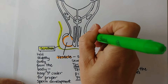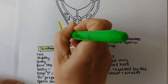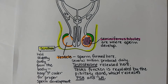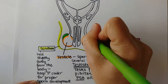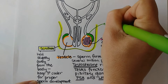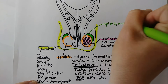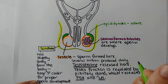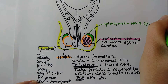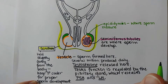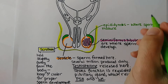The epididymis sits on top of each testicle, and it is where the sperm actually mature — they get their tail and they learn how to swim — so when the time comes they're ready and able to swim.